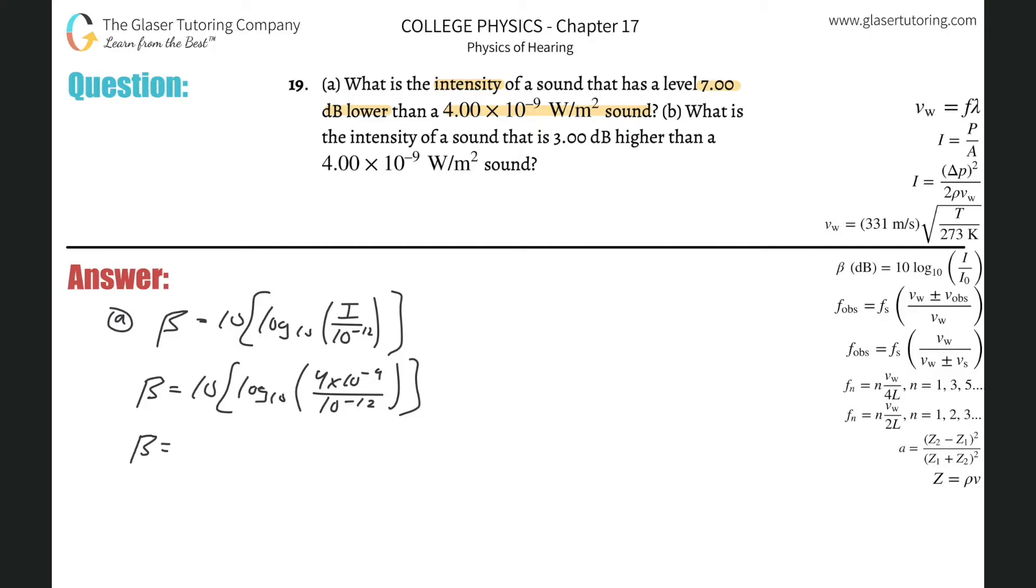So 10 times log of 4 times 10 to the minus 9 divided by 10 raised to the minus 12. And what do we get? We get about 36. So this is 36 decibels.